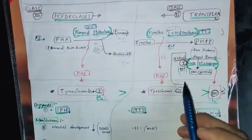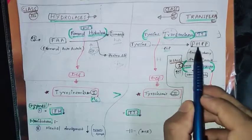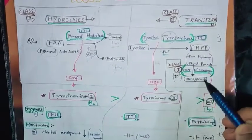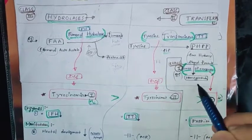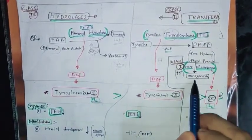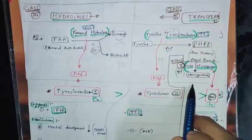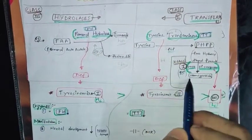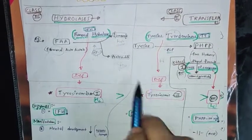Now for Class 1 (oxidoreductase): when tyrosine converts into PHPP that is the first reaction; the second reaction is para-hydroxyphenylpyruvate converting into homogentisate. You already know this well. In this way all reactions in tyrosine metabolism are covered, just as we completed reactions in the Krebs cycle and glycolysis.